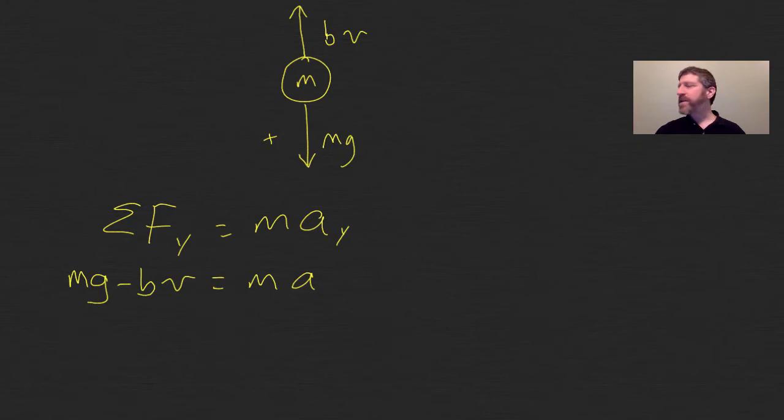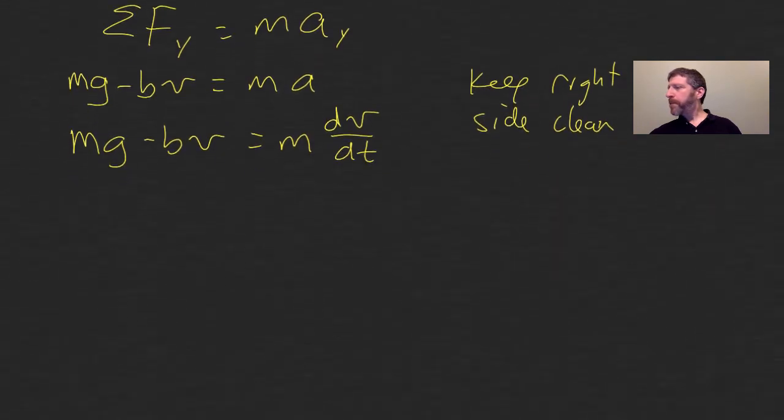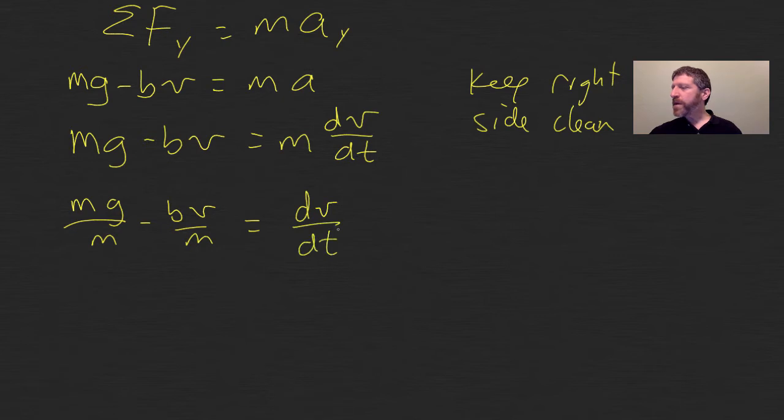So now I want to make this into a differential equation, which it's almost there. I've got mg minus bv equals m times, how do I make that into a derivative? It's just dv dt. Now as before, a good mnemonic is we want to keep the right side clean. And by clean, I just mean as neat as possible. So what I want to do is, as before, divide both sides by m. That'll give me mg over m minus bv over m equals dv dt. There's my differential equation.